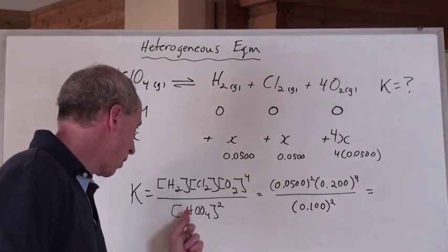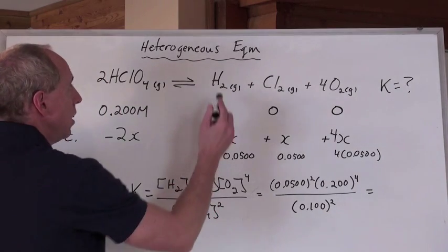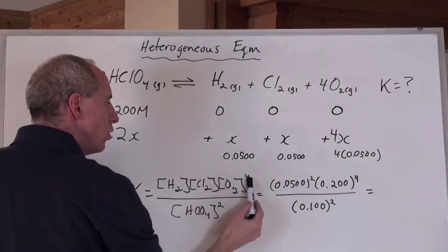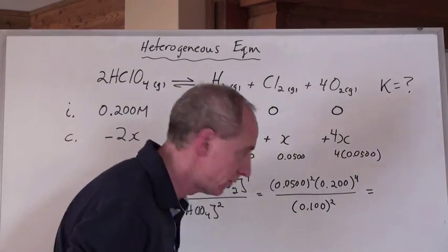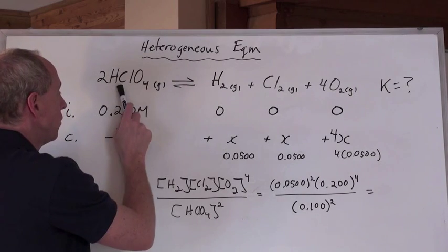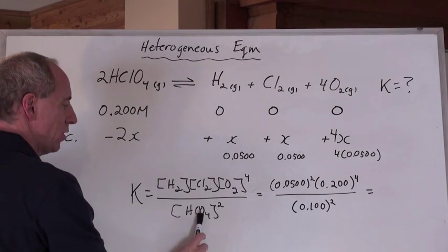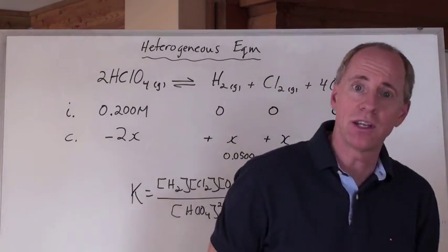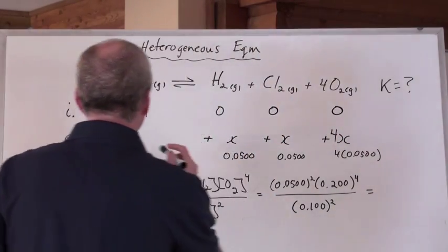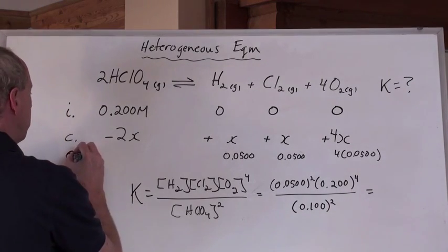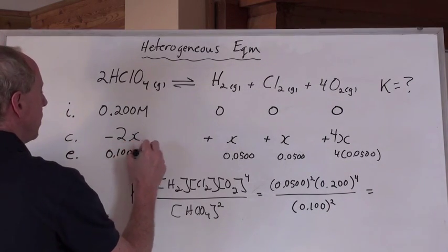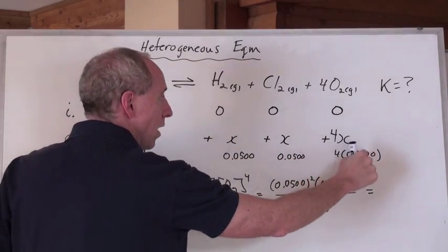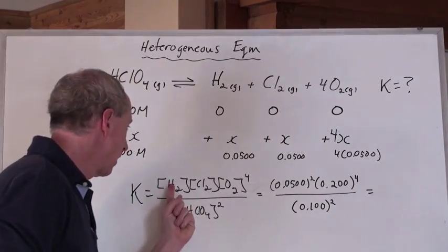So, there's the expression for this reaction. The concentration of the H2 times the Cl2 times the O2 to the fourth power, right? And it's all divided by the concentration of the reactant, which is the HClO4, squared, because of the two in front there. Now, we plug numbers in from what we just calculated. Remember that this at equilibrium right here was 0.100 moles per liter.